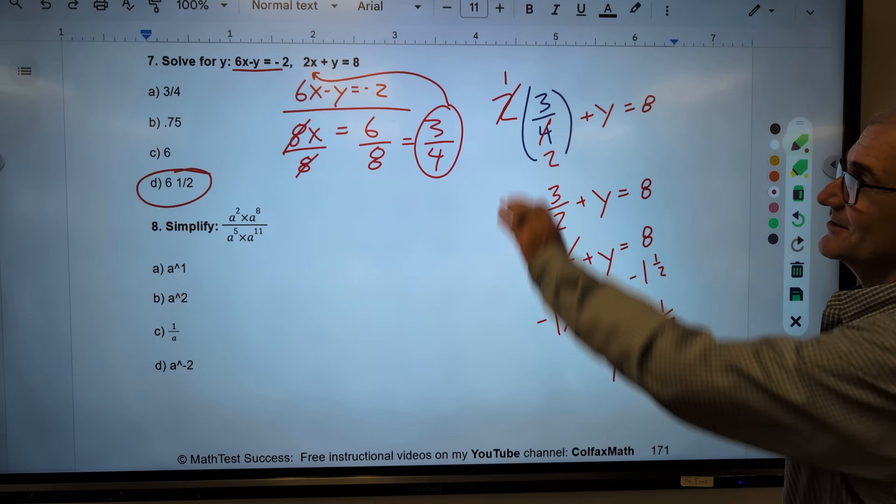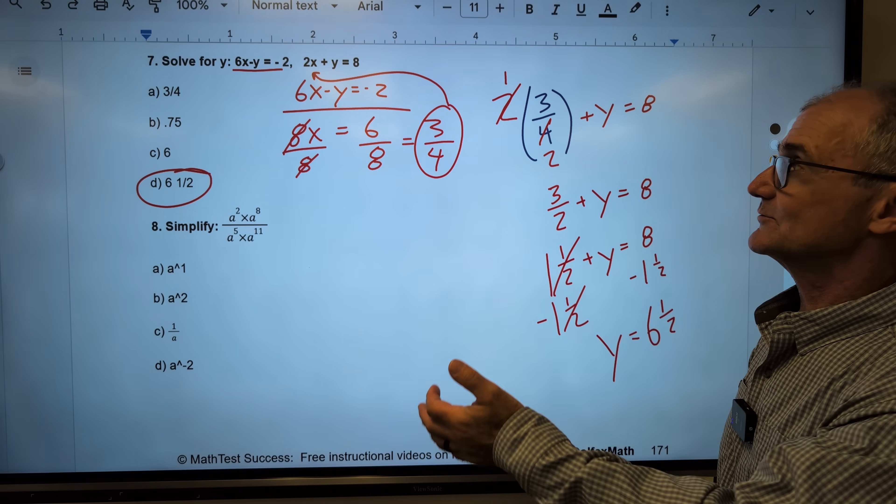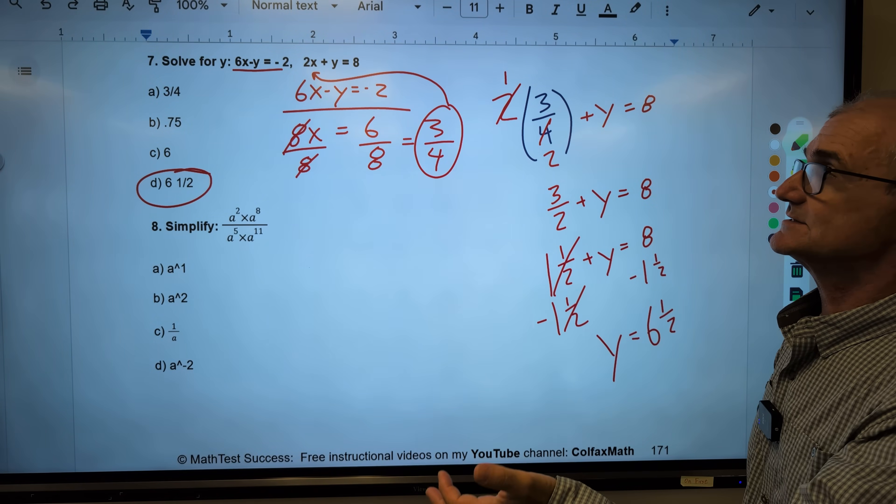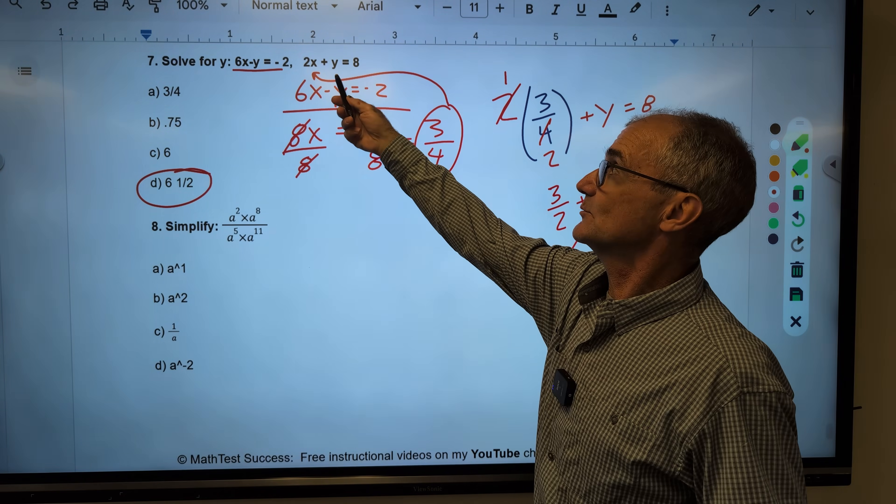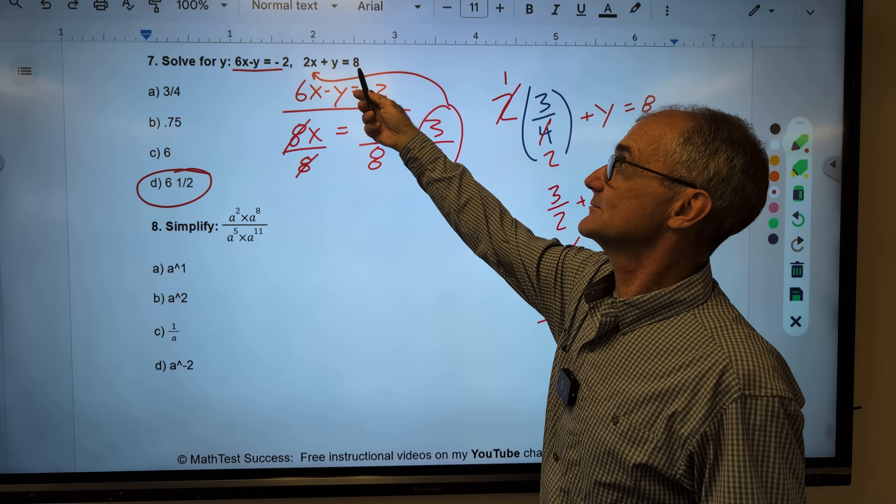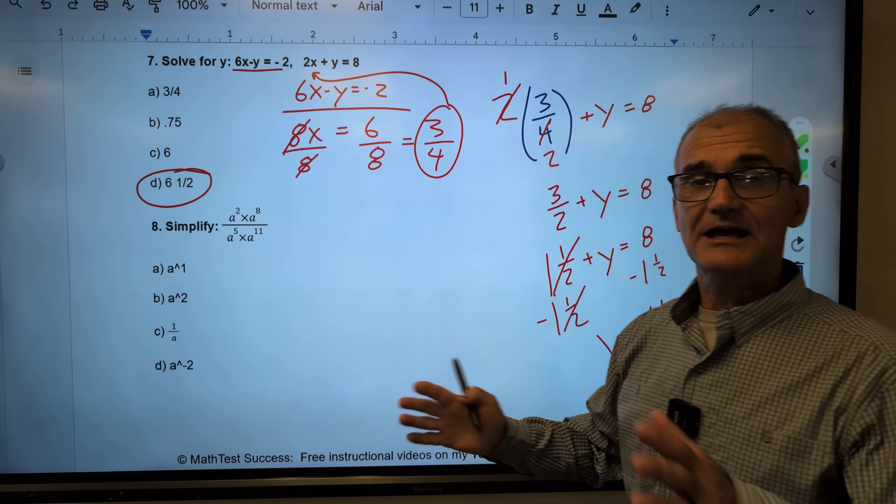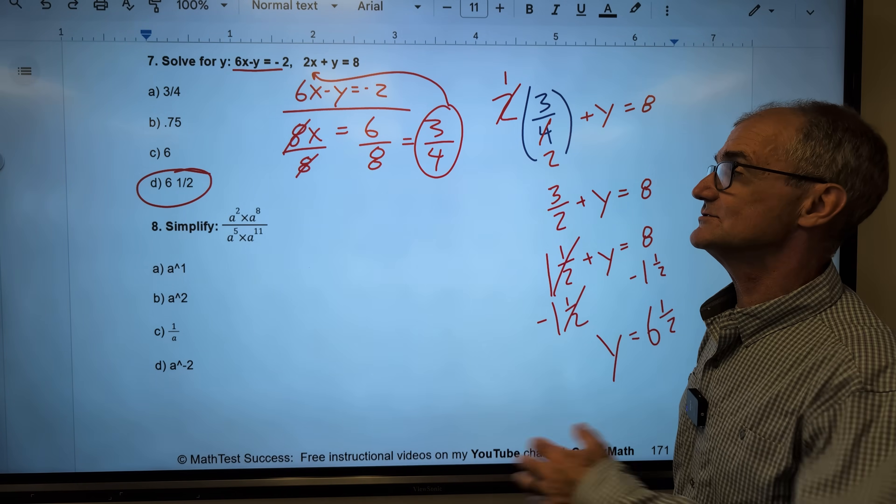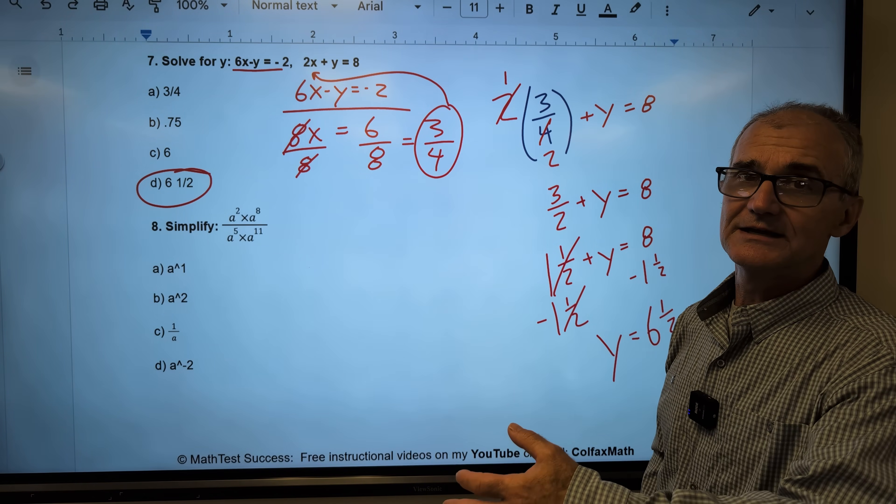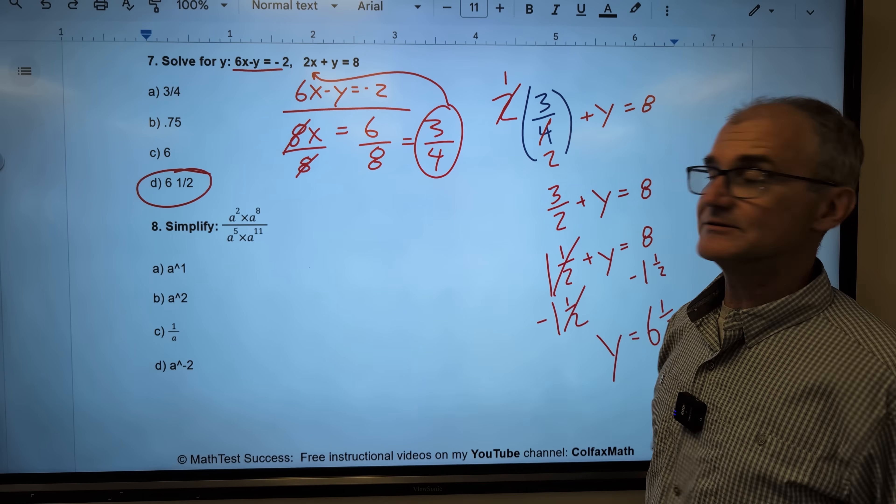This solving systems of equations was a lot harder than the last one. We could have also done it with substitution. We could have solved for y here, said y is equal to 8 minus 2x. Take that value and plug it in there. A lot of ways to do these problems. I usually try and show you the quickest way and then show you alternative ways as well.